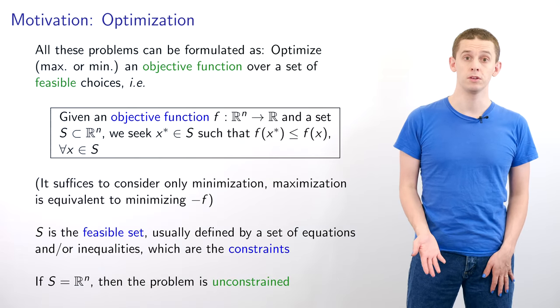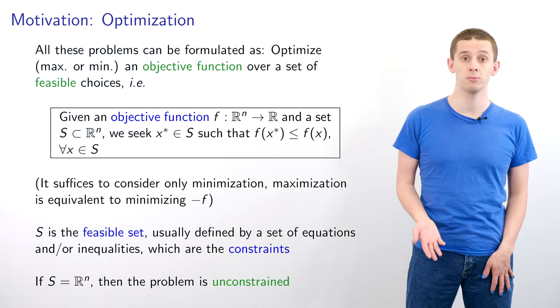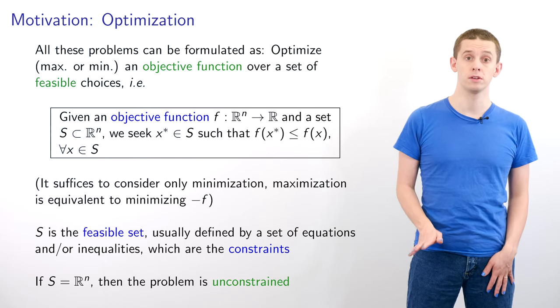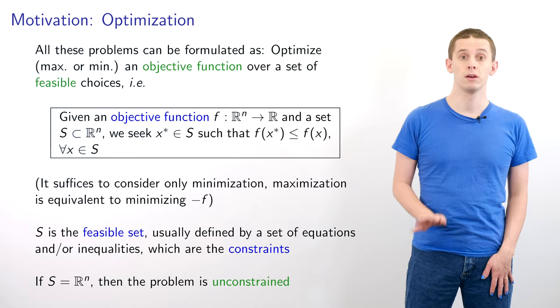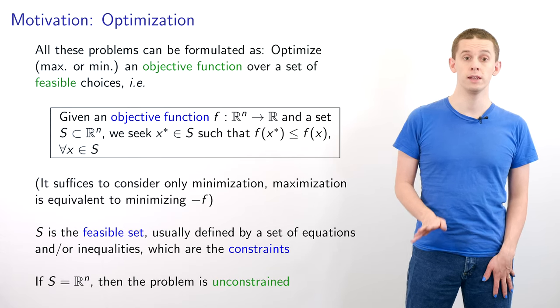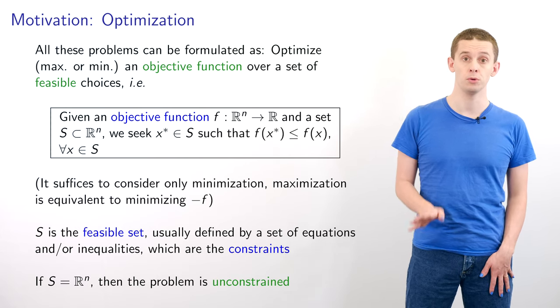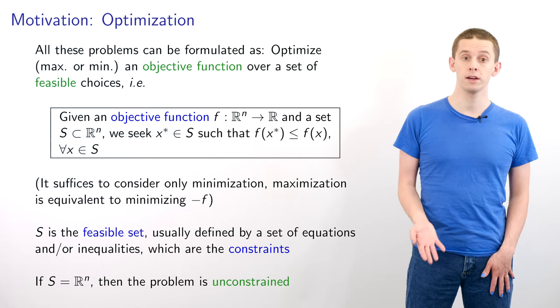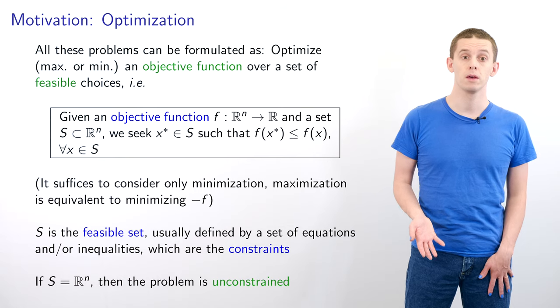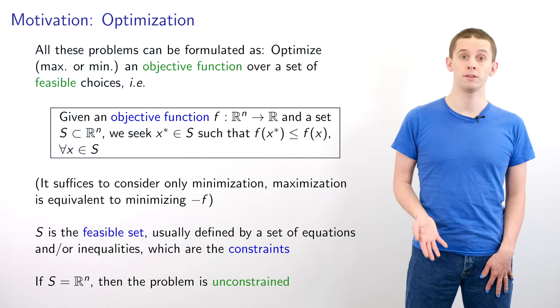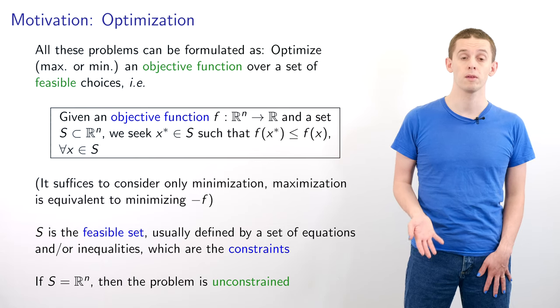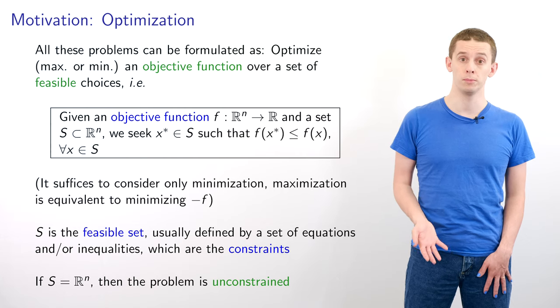All these problems can be formulated in the following way. We want to optimize, i.e. maximize or minimize, an objective function over a set of feasible choices. And mathematically we can define this as follows. Given an objective function f from R^n to R and a set s contained within R^n we want to find an x star in s such that f of x star is less than or equal to f of x for all x in s. And it suffices to consider only minimization since maximization is equivalent to minimizing minus f. And we call s the feasible set and that is usually defined by a set of equations and or inequalities which are referred to as the constraints. And if s is just equal to R^n then the problem is unconstrained.